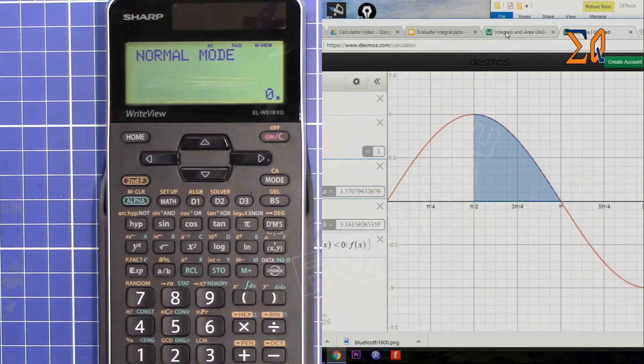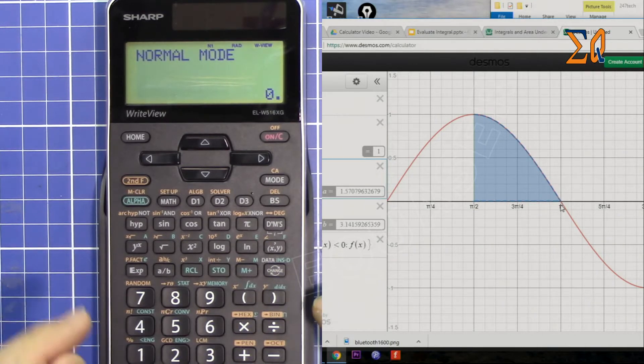We want to find the shaded area between π/2 and π using this calculator, so let's see how we can do it.